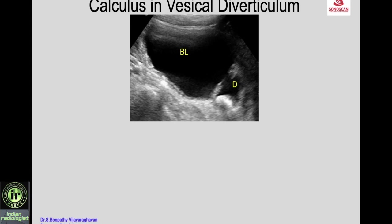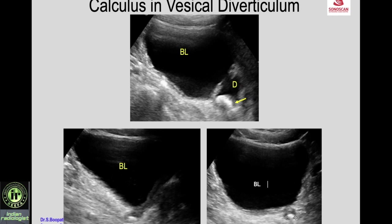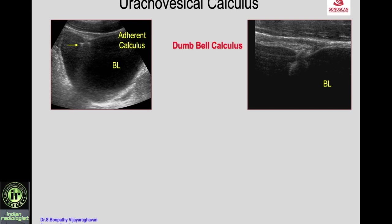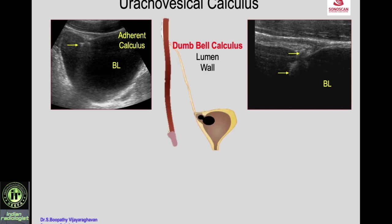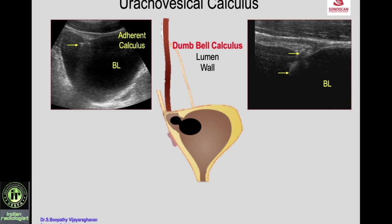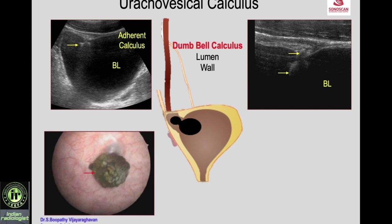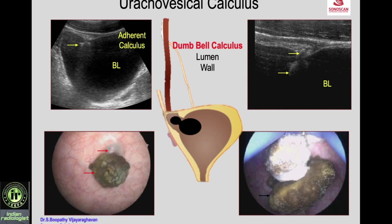There may be a calculus in a vesical diverticulum — the bladder, the diverticulum with communication, and a calculus within it. Another cause of calcification in the bladder: a calcification with shadow on the anterior wall, fixed, not shifting with patient position. With high frequency you see a dumbbell-type calculus — one part in the lumen and part in the wall of the urinary bladder near the dome. This is the typical appearance of a urachal vesical calculus — the persistent urachal diverticulum at the dome of the bladder with calculus part in the bladder and part in the patent urachus. Cystoscopy confirms the luminal and wall portions.